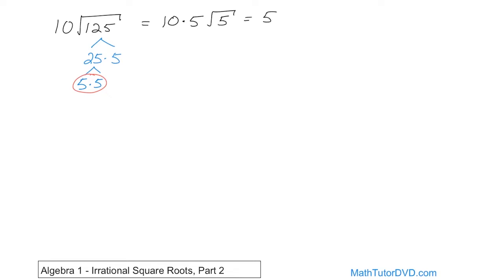10 times 5 is 50, and the square root of 5 stays along for the ride. That's the final answer: 50 times the square root of 5.